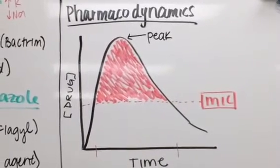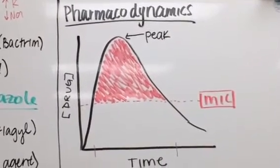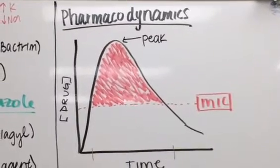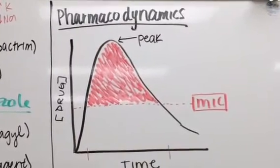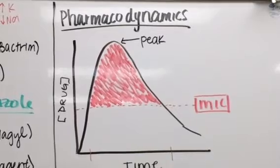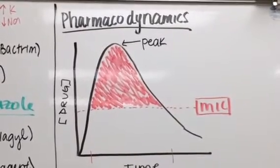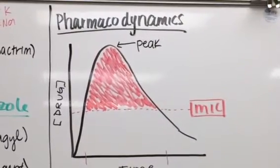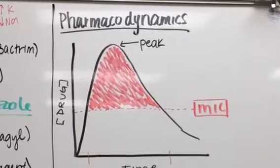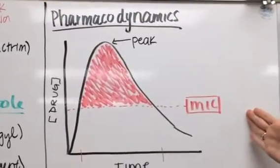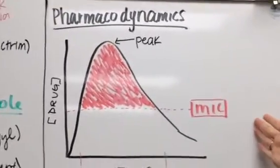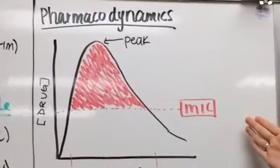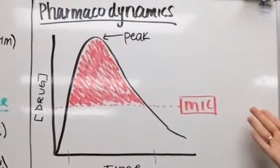And then we have something called pharmacodynamics, which is what the drug is going to be doing to the organism. We think about pharmacodynamics especially with antibiotics because we want to make sure that we're getting rid of the bacteria.